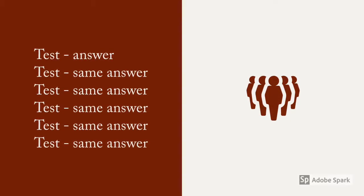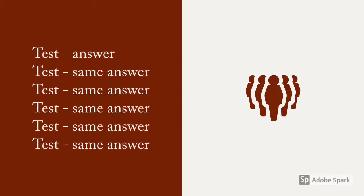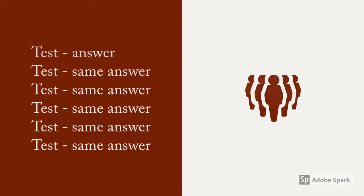A theory happens when thousands of different people do thousands of different tests and all come to the same answer.